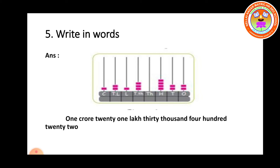5th question: write in words given the diagram. See the diagram. Ones: 2, tens: 2, hundreds: 4, thousands: not given, 10,003 lakhs: 1, 10 lakhs: 2, crore: 1.